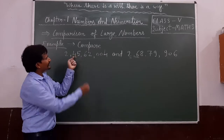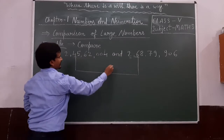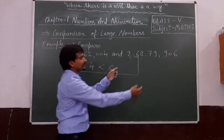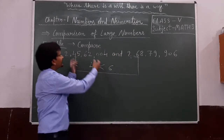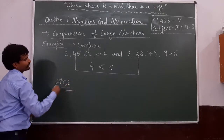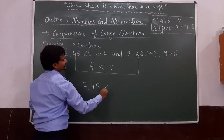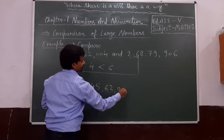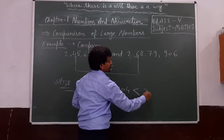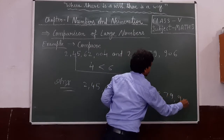6 is greater than 4. So we can say that this number is greater than this number. We write the answer this way: 2,45,62,400 is less than 2,68,79,906.